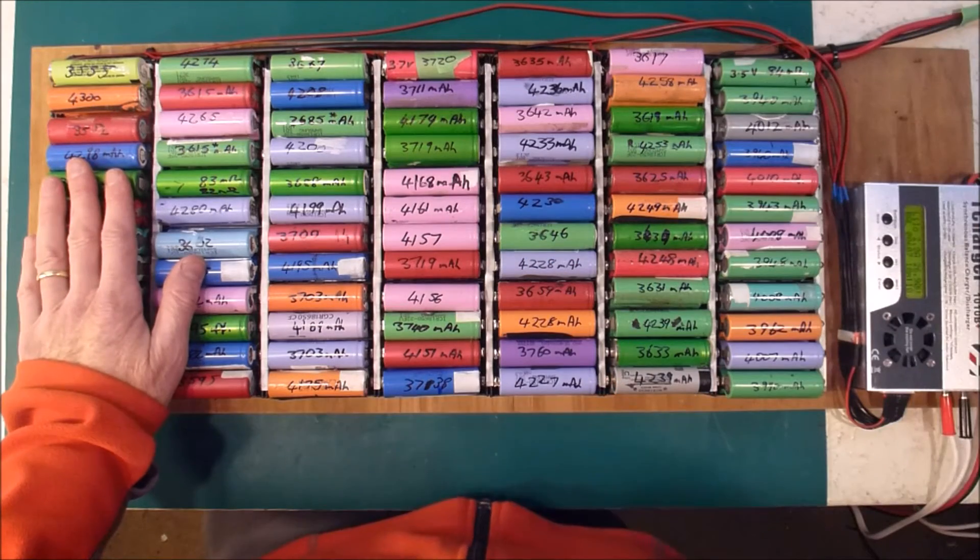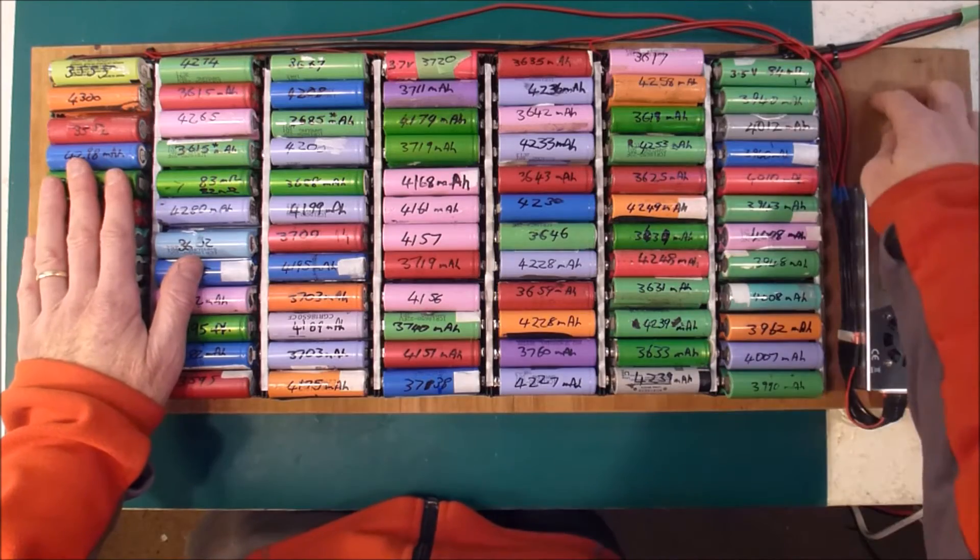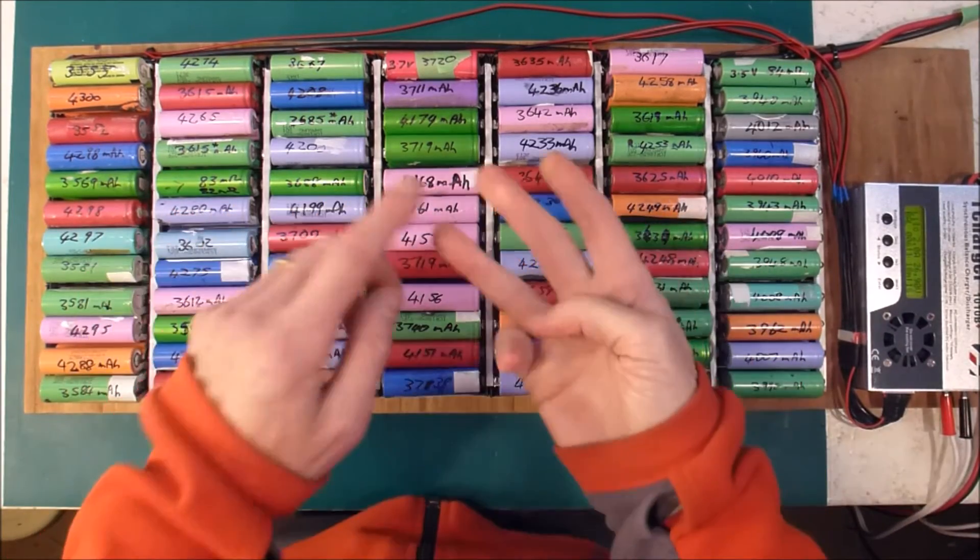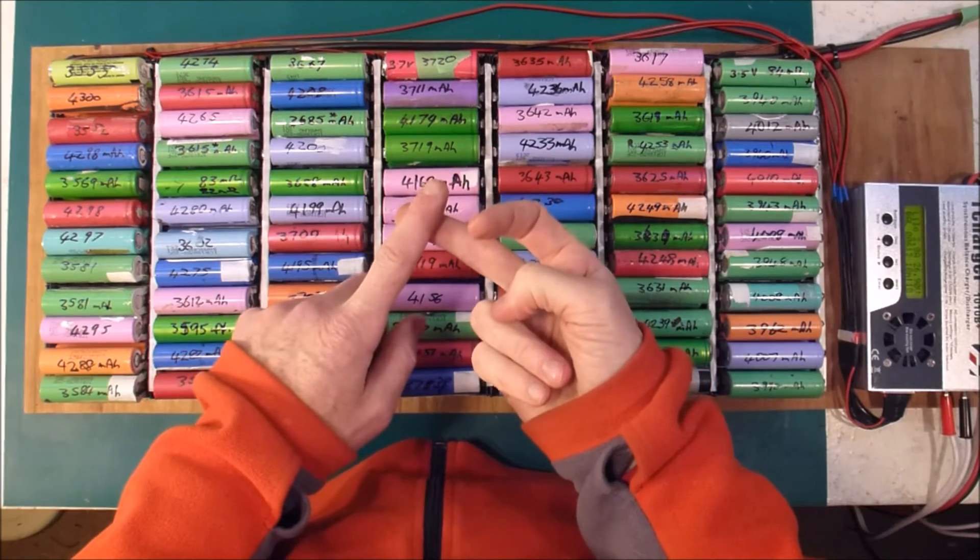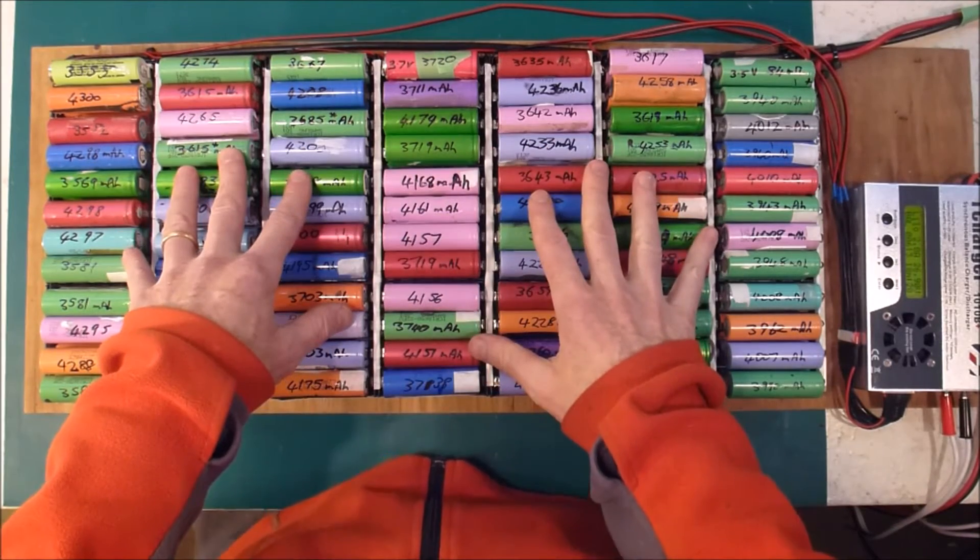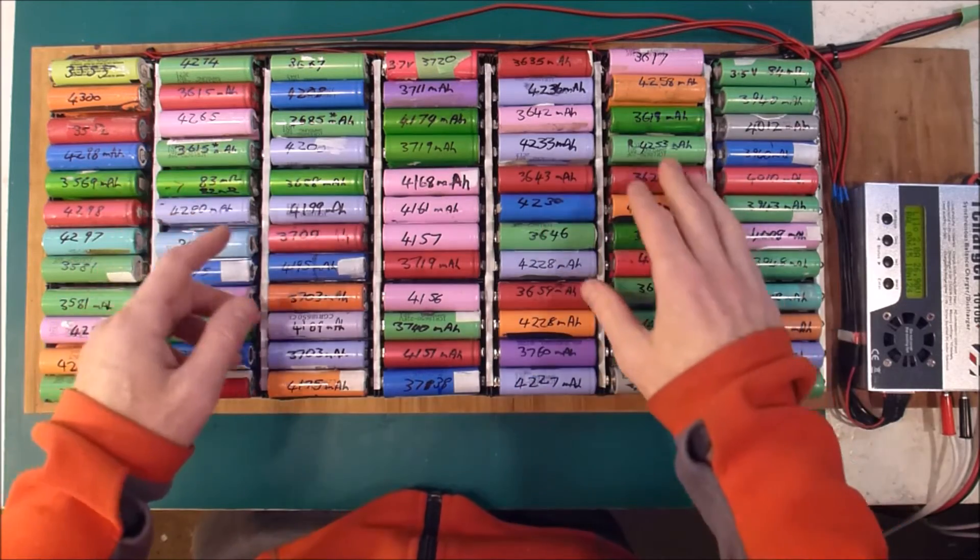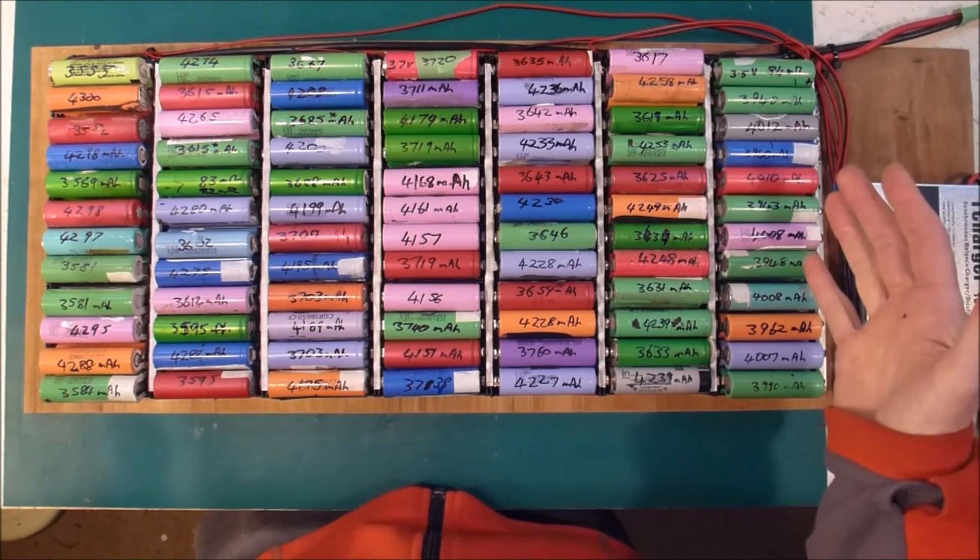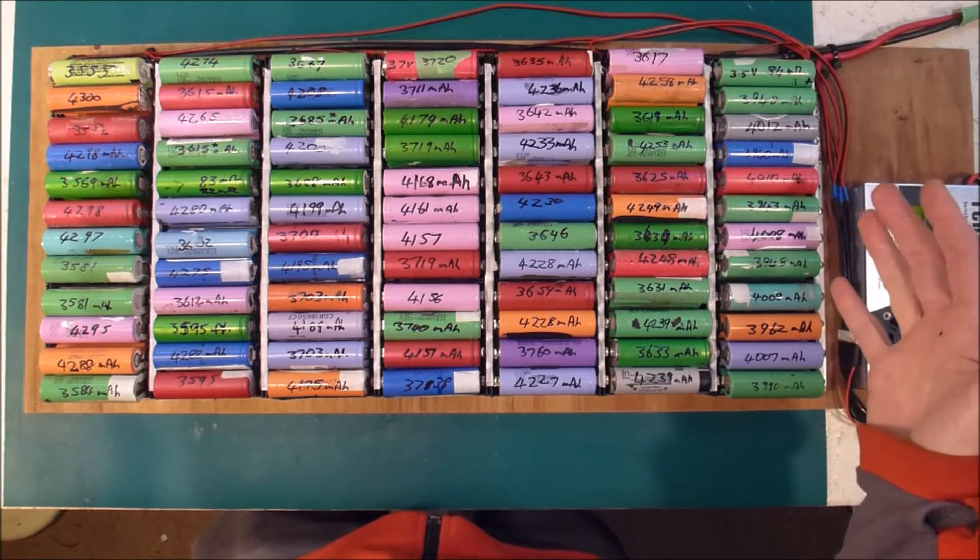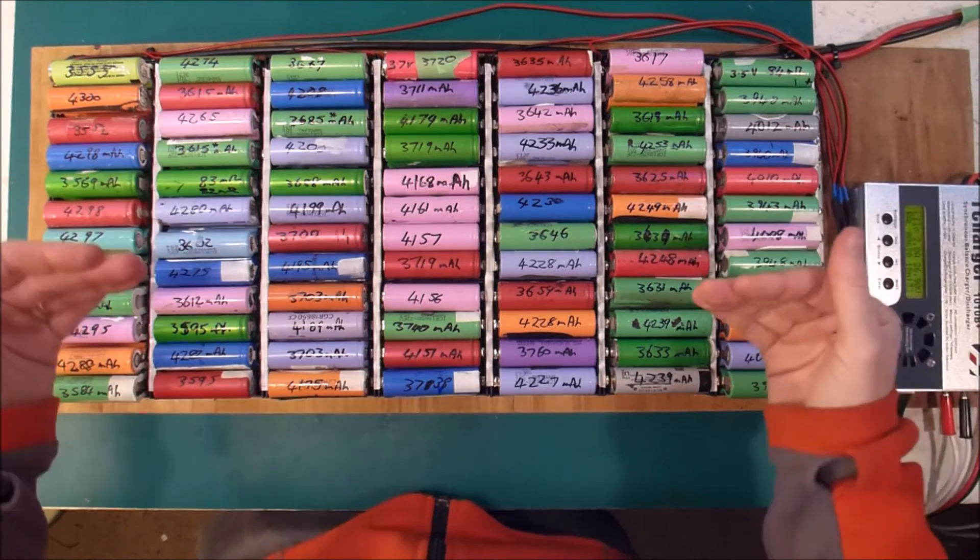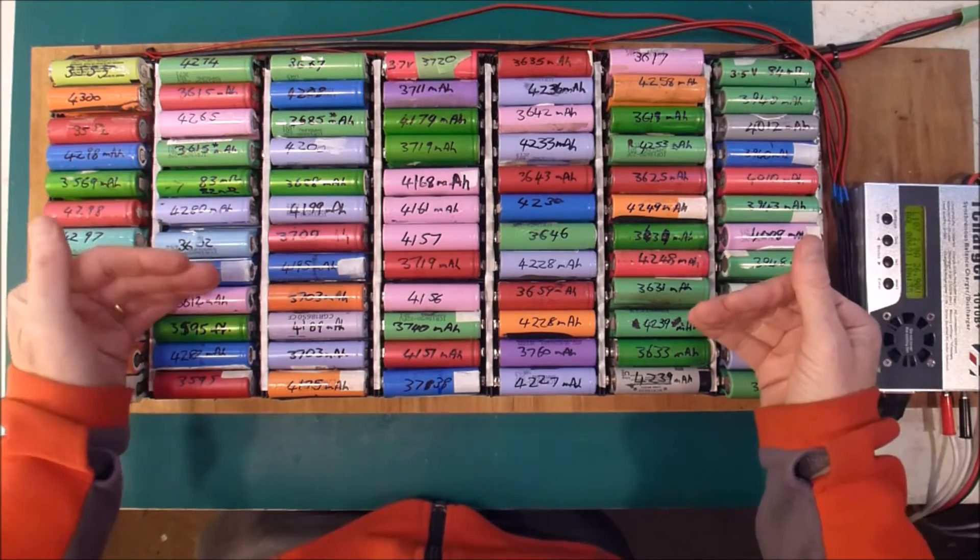Otherwise I'll just keep looking at the cell logger to make sure that the different levels are okay. The other thing a BMS does is disconnects when the voltage gets too low, but in my case if I've got this all hooked up to an inverter, it already has a low voltage cutout, so that's covered.